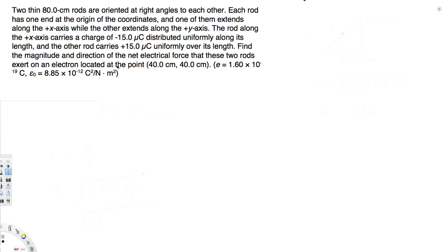Let's try this problem. The question asks: two thin 80-centimeter rods are oriented at right angles to each other. Each rod has one end at the origin of the coordinates — one extends along the positive x-axis, the other along the positive y-axis. The rod along the x-axis carries a charge of negative 15 microcoulombs distributed uniformly, and the other carries plus 15 microcoulombs uniformly. Find the magnitude and direction of the net electric force these two rods exert on an electron located at point (40 cm, 40 cm).